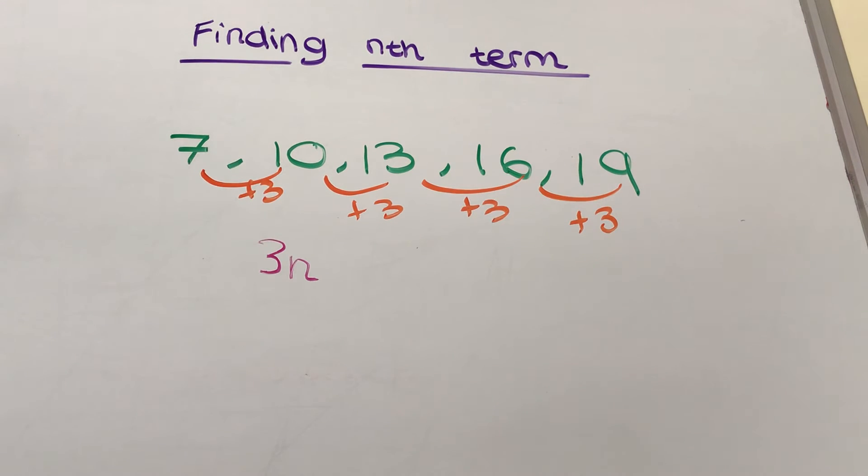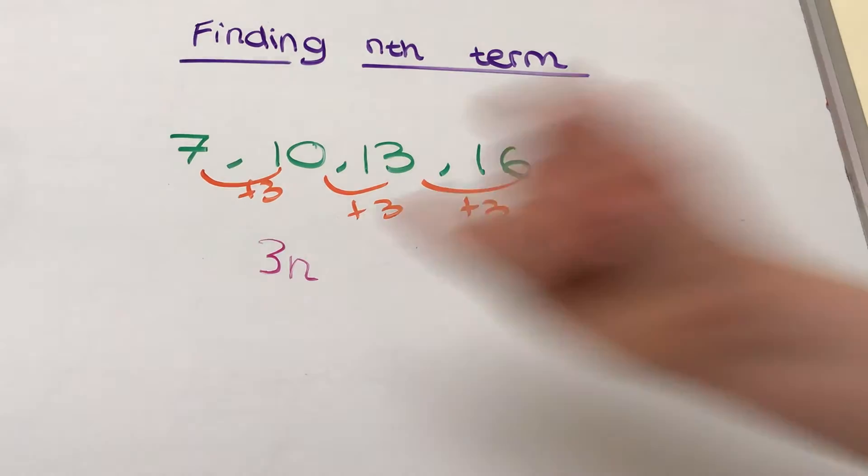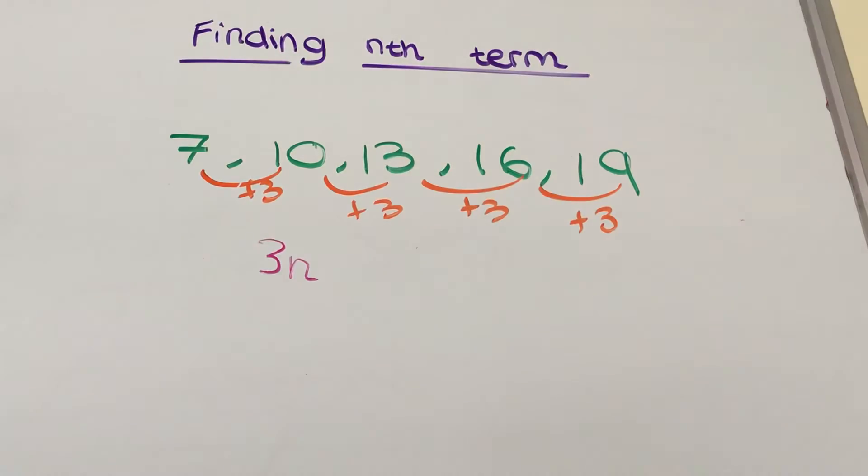However, we're not doing that because as you can see we're starting with 7, and 7 is not how you start the 3 times table. You start the 3 times table with 3, but we have to work with the fact we have 7.